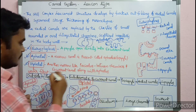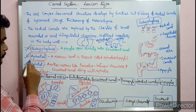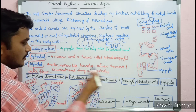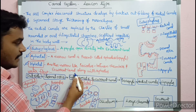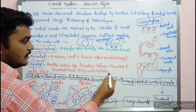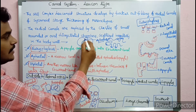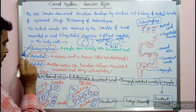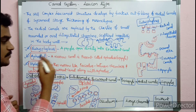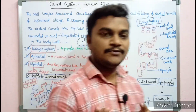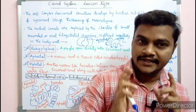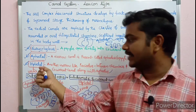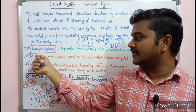In the Diplodal type, there is another narrow tube present between the flagellated chambers and the excurrent canal, along with the aphodus. So if you have two narrow channels, you are looking at the Diplodal type of apopyles.